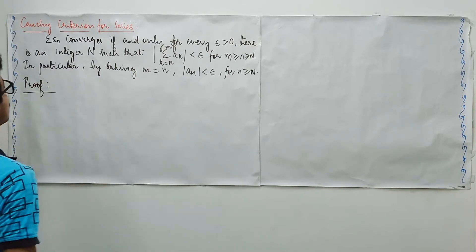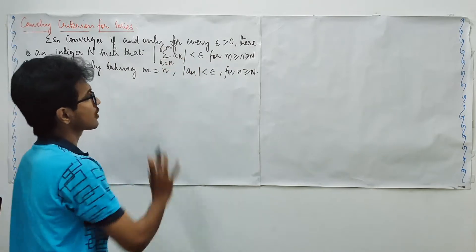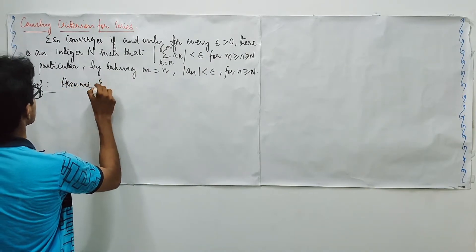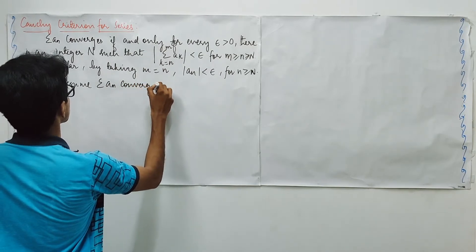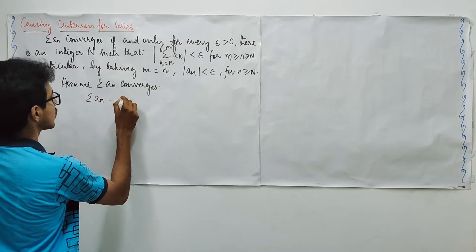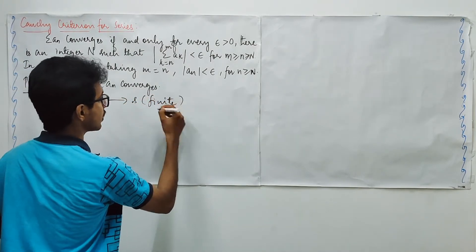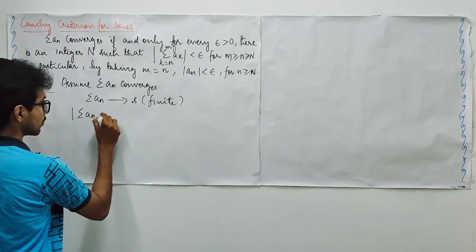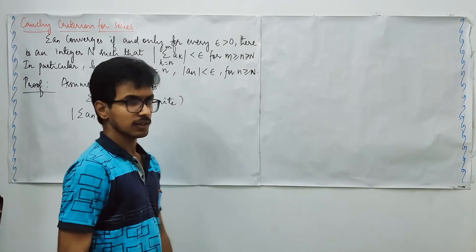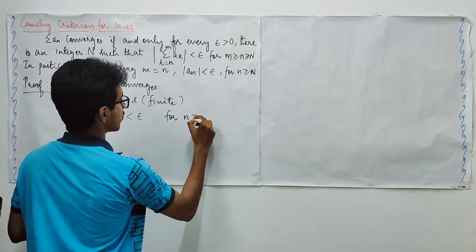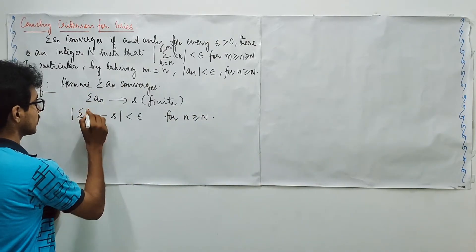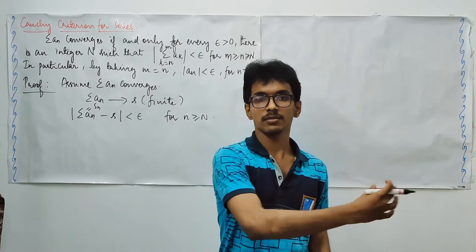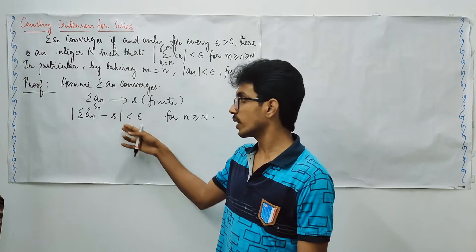First, by assuming the series converged, we will have to prove this condition is being satisfied. Let us take the summation a_n converges. It converges means this converges to some finite limit, some finite value s to which it converges.